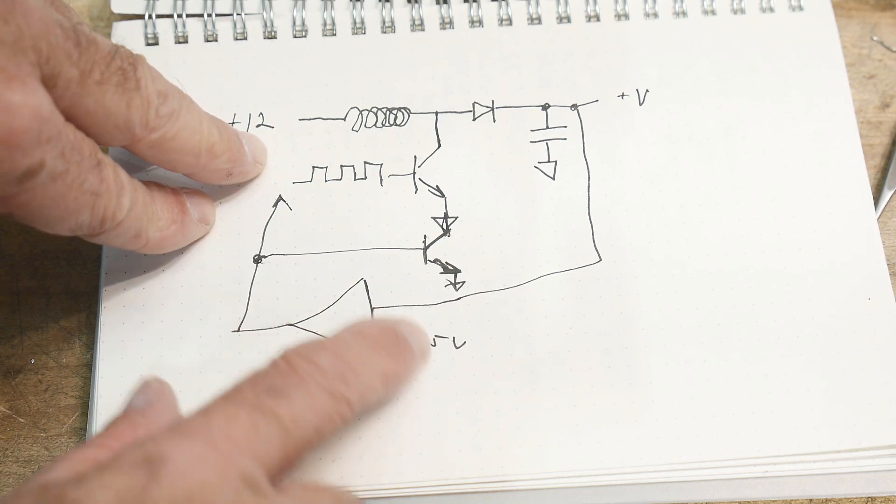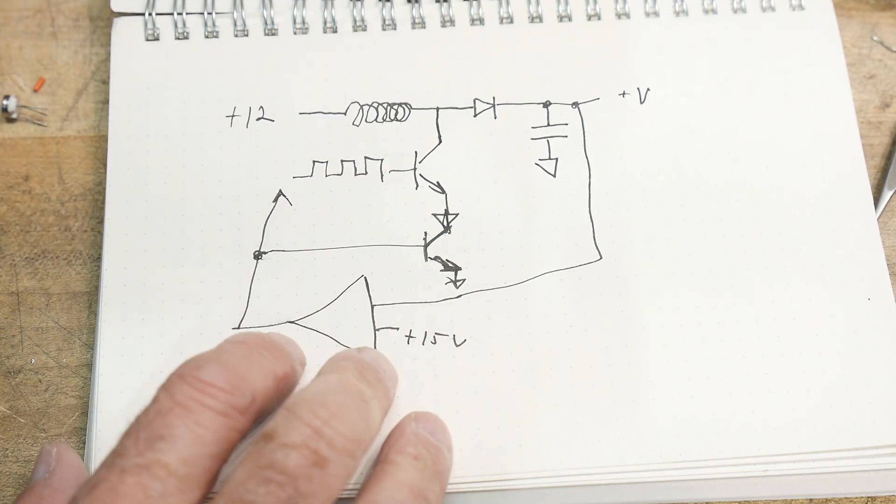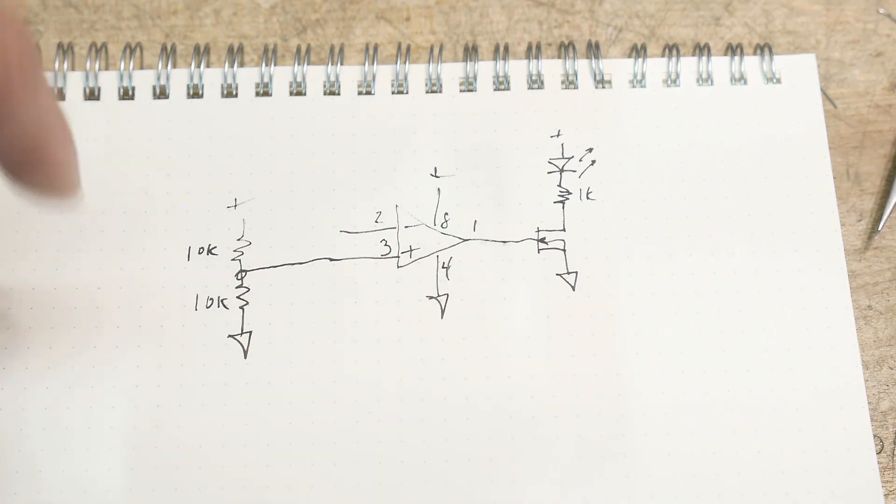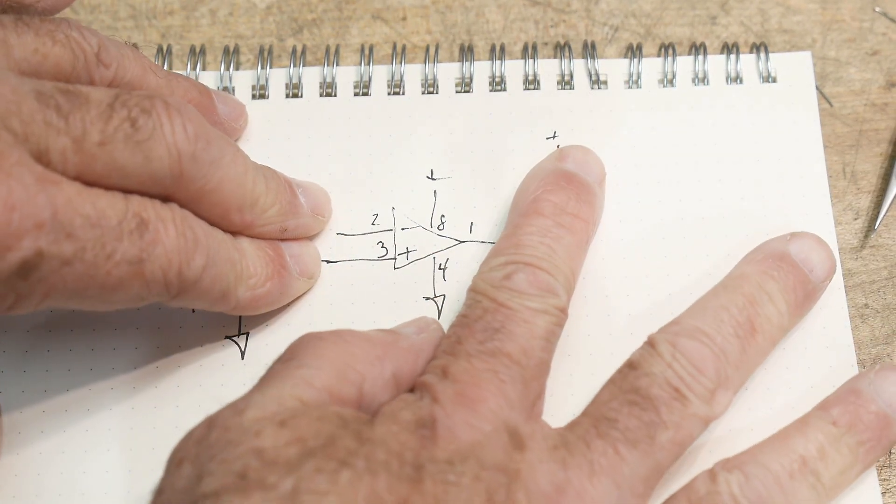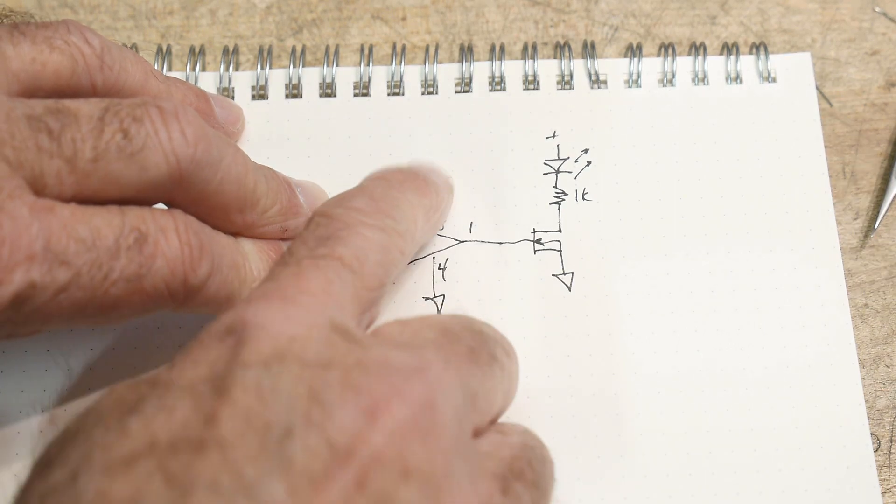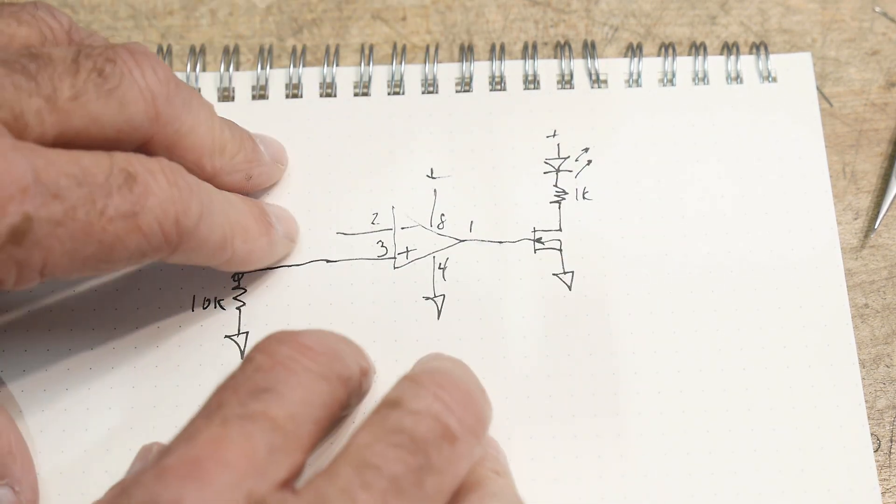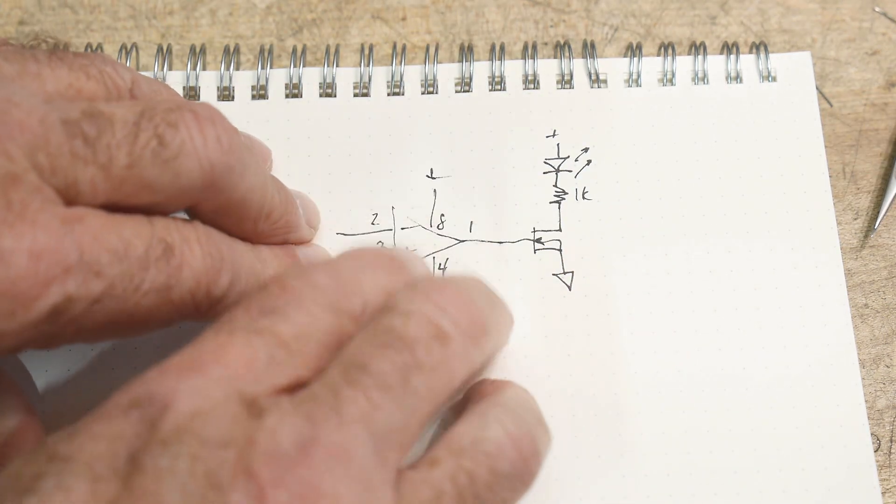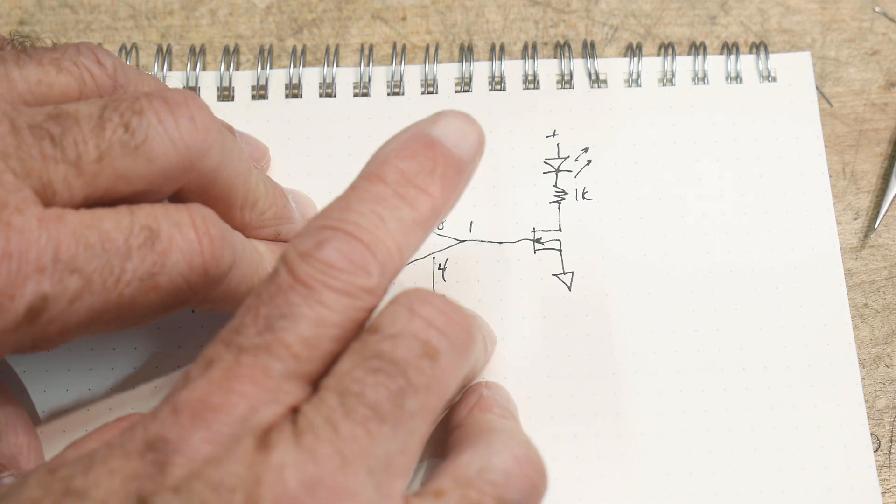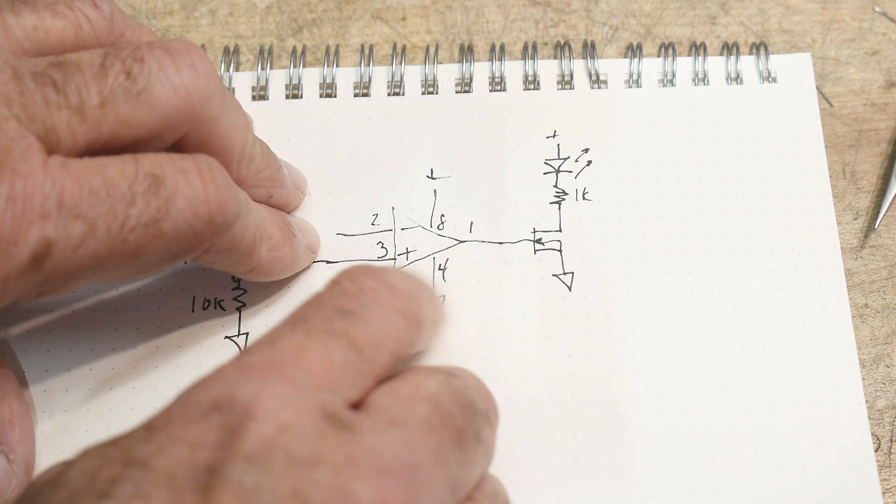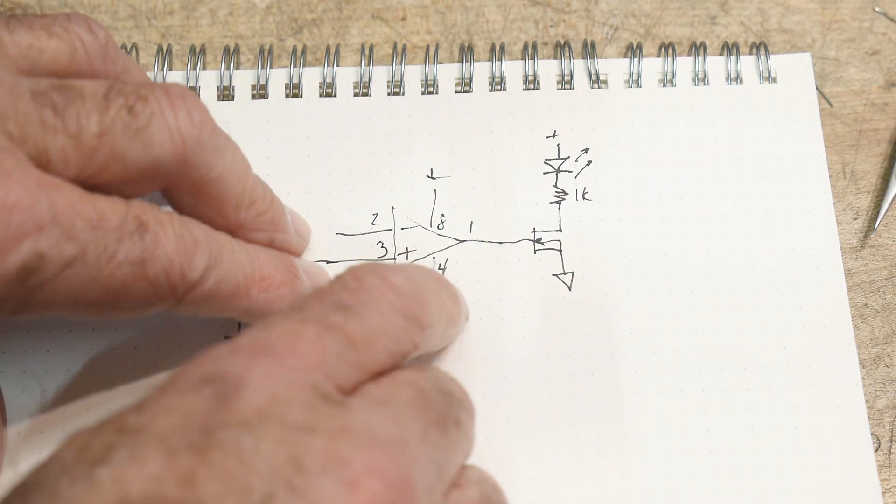And so we're going to need a comparator over here. So this is what I came up with here. We're going to use a comparator and a ground to VCC op amp, so you need to be able to choose the op amp wisely. And so I've chosen a TLC 272 and the TLCs are guaranteed to work down to ground, so I've got a video on that, look it up.